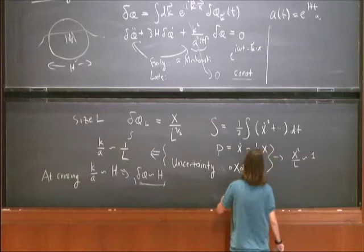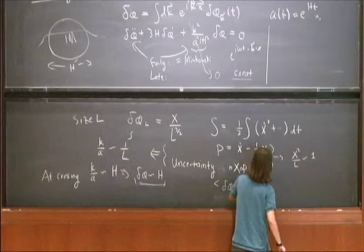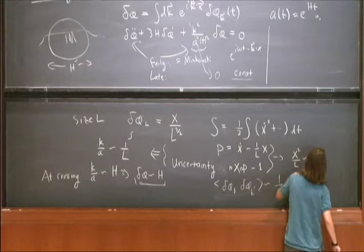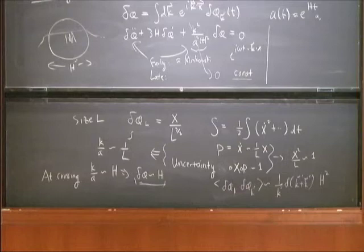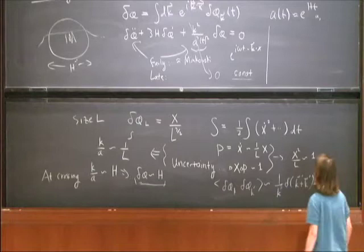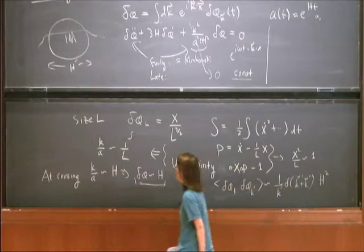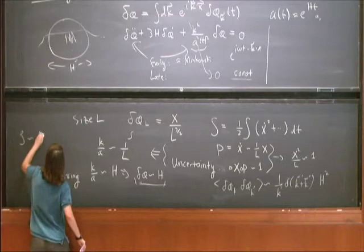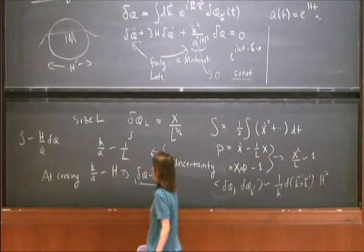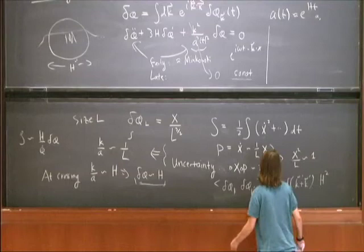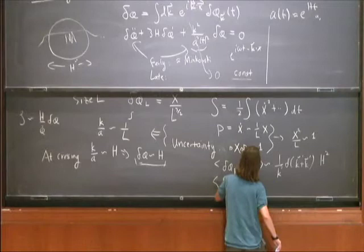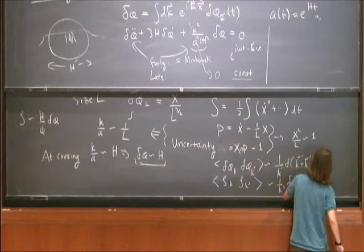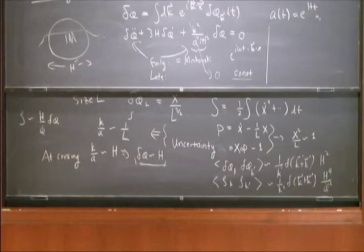This is basically why, when you compute the two-point function in a more standard way, you get this result up to some constants. The last step: it's often expressed in terms of the curvature perturbation of the metric, which we discussed. That's just a time reparameterization. The zeta variable is related to phi by a time reparameterization, and that gives the answer for the curvature perturbation, which for slow roll is this expression.